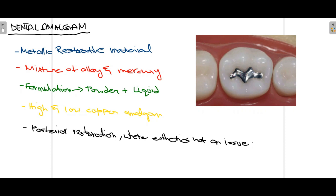There are basically two types of dental amalgam: high copper and low copper. Currently, high copper amalgam is most frequently used because of its superior properties, including decreased micro-leakage and increased occlusal stress-bearing capacity. As you can see in this picture, there is a difference in color between dental amalgam and the tooth, which means dental amalgam is not aesthetic. Due to this disadvantage, dental amalgam is mostly limited to posterior restorations such as premolars and molars, where aesthetics is not an issue.